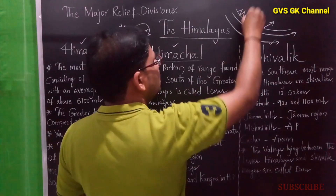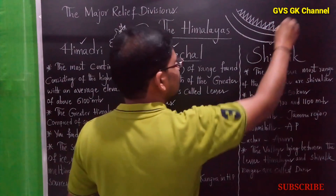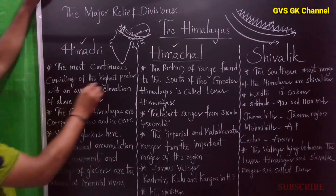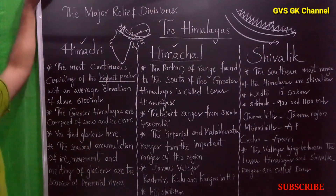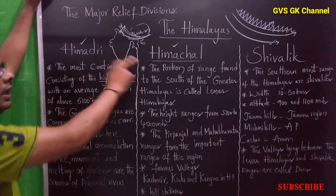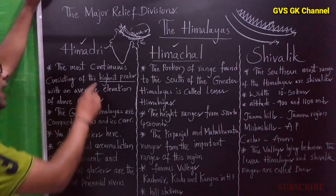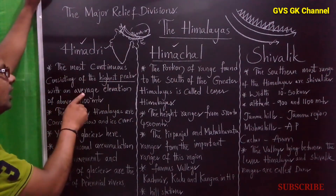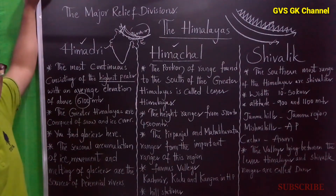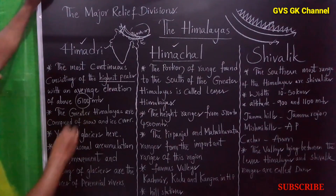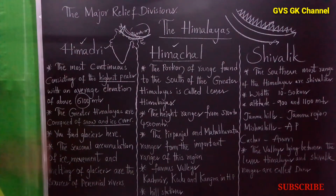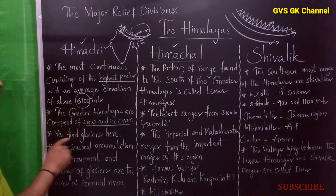We are going to discuss about the Greater Himalayas or the Himadri range. What is the speciality of the Himadri range? It is the most continuous range, consisting of the highest peaks. It has the highest peaks with an average elevation above 6100 meters. The Greater Himalayas are composed of snow and ice cover, and glaciers can be found in this region.